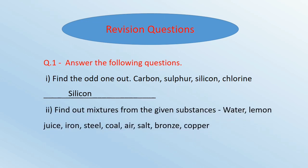Second: Find out the mixture from the given substances: Water, Lemon juice, Iron, Steel, Coal, Air, Salt, Bronze and Copper. And the answer is: Lemon juice, Steel, Air, Bronze. These are mixtures.